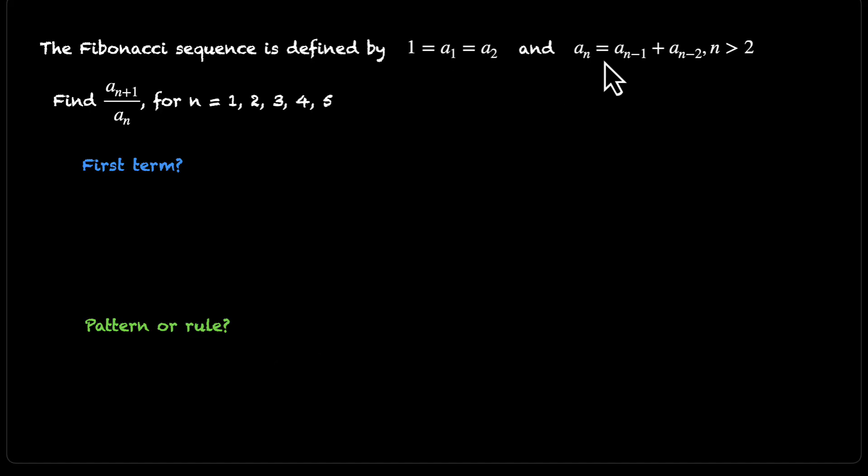If you look at these two things, the first one says 1 = a1 = a2. So we have a1 right here, that's our first term. We actually know our first term, and not just the first term—we know the first and second term. In fact, both of them are equal. So we know where it gets started.